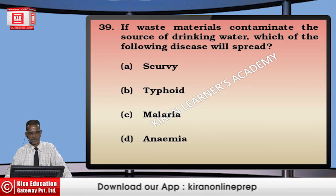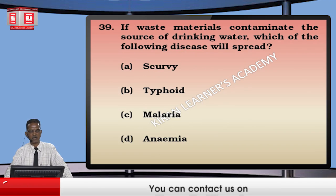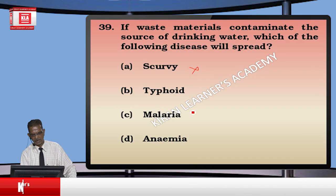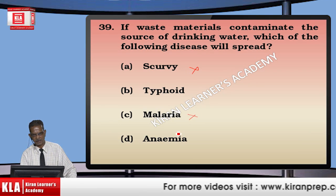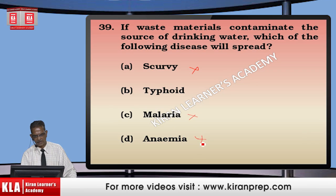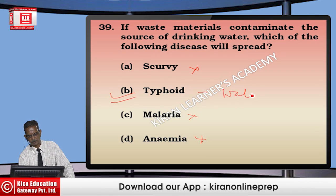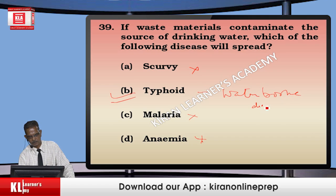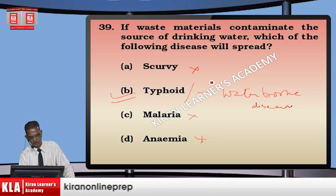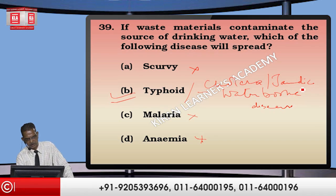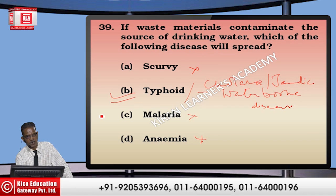If waste material contaminates the source of drinking water, which disease will spread? Scurvy is a vitamin C deficiency disease. Malaria is a vector-borne disease transmitted by the female Anopheles mosquito. Anemia is iron deficiency. The correct answer is typhoid, which is a waterborne disease. Other common waterborne diseases include cholera and jaundice.